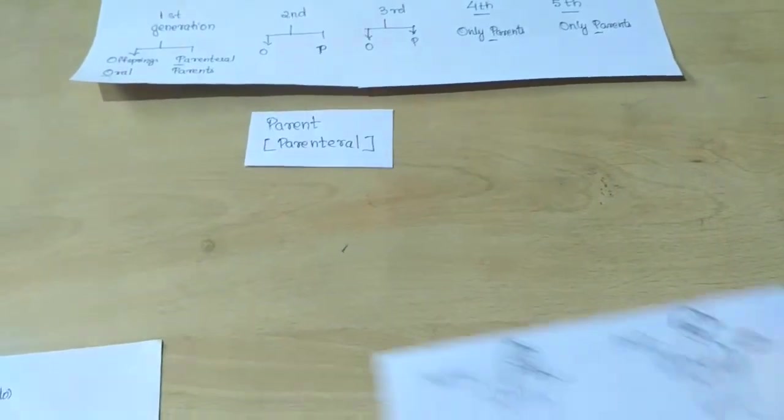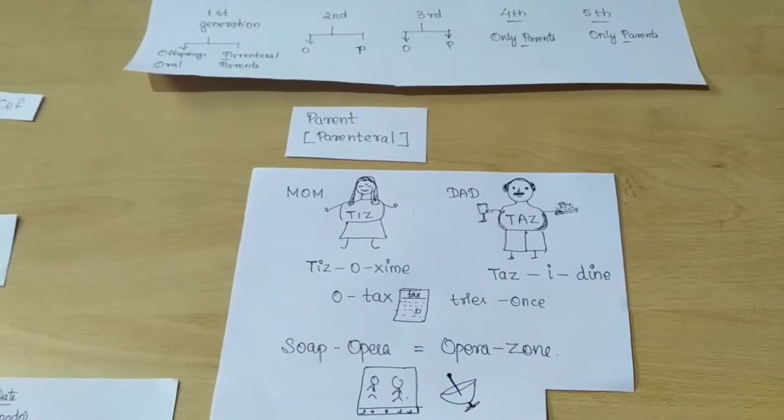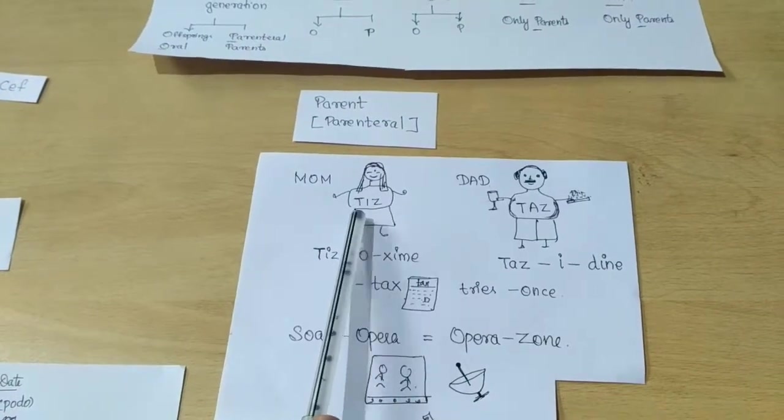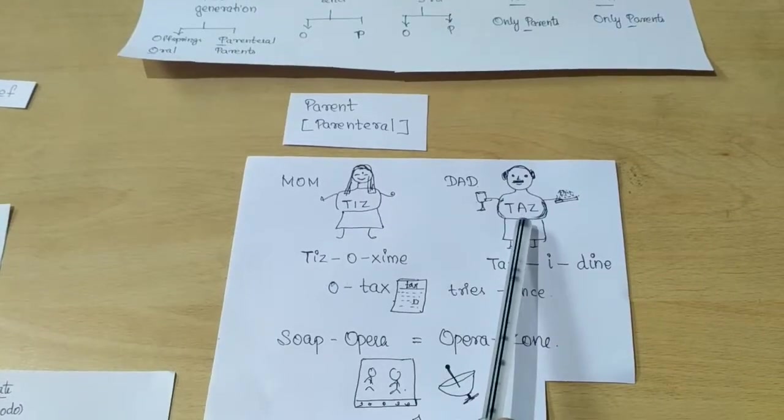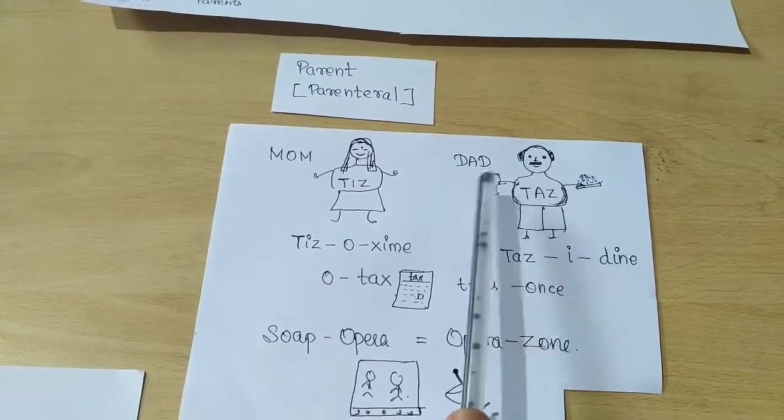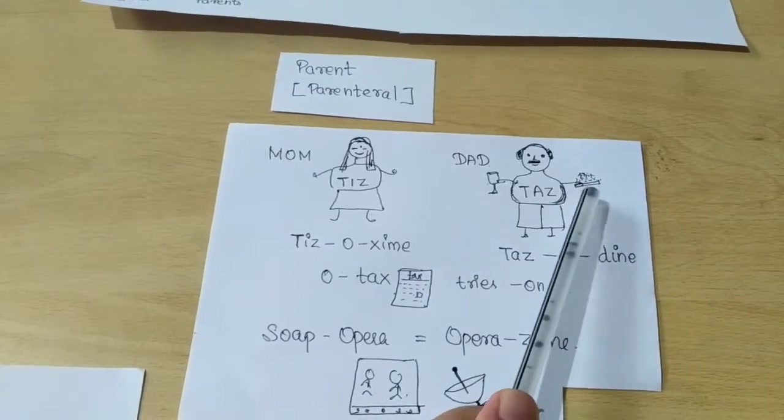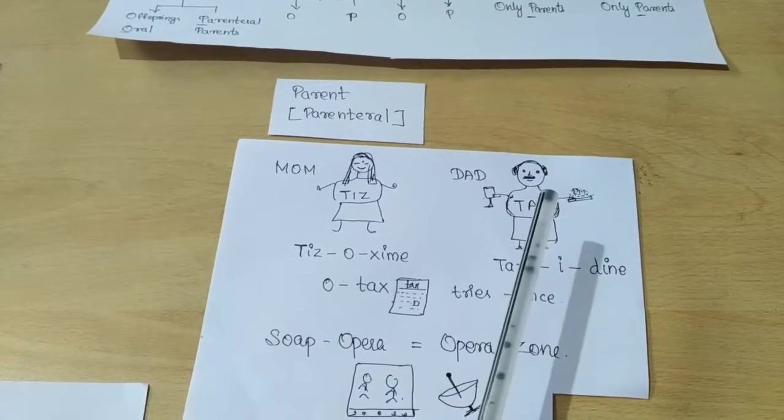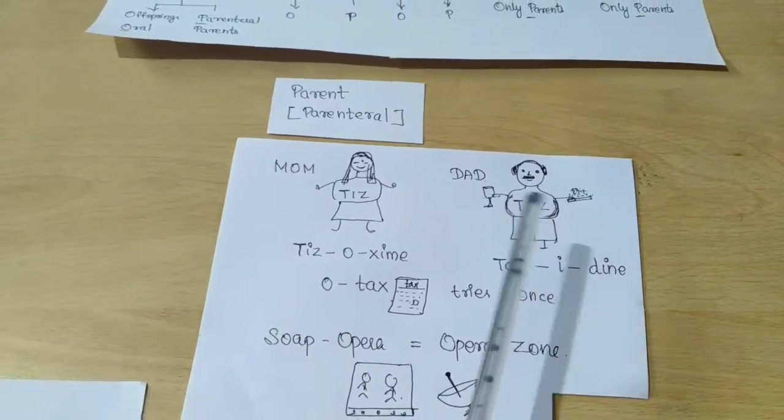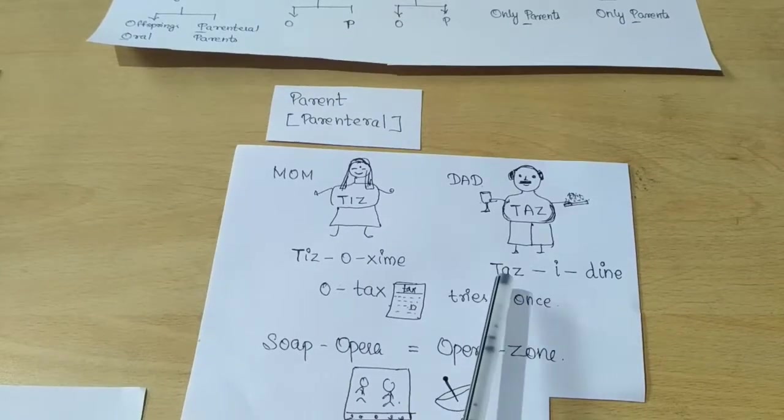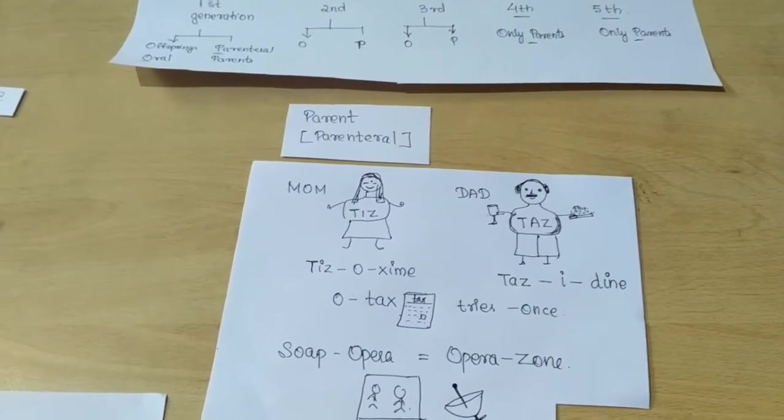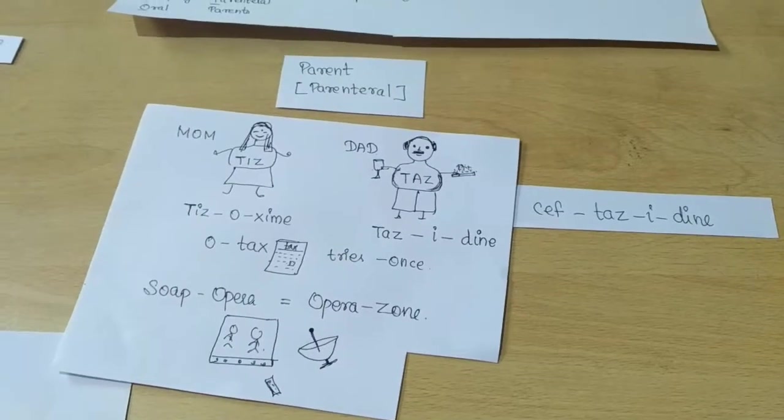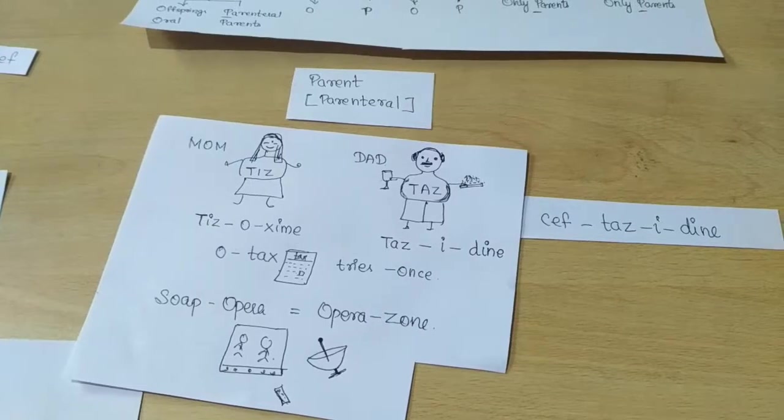For the parenteral drugs we have to see this picture of the parents of I Zyme. His father's name is Taz. First we will look at his father. He is having one glass of wine and the other glass he is having some rice, and his name is Taz and he's into dining. He loves to eat, so he will give us the drug Ceftazidime.